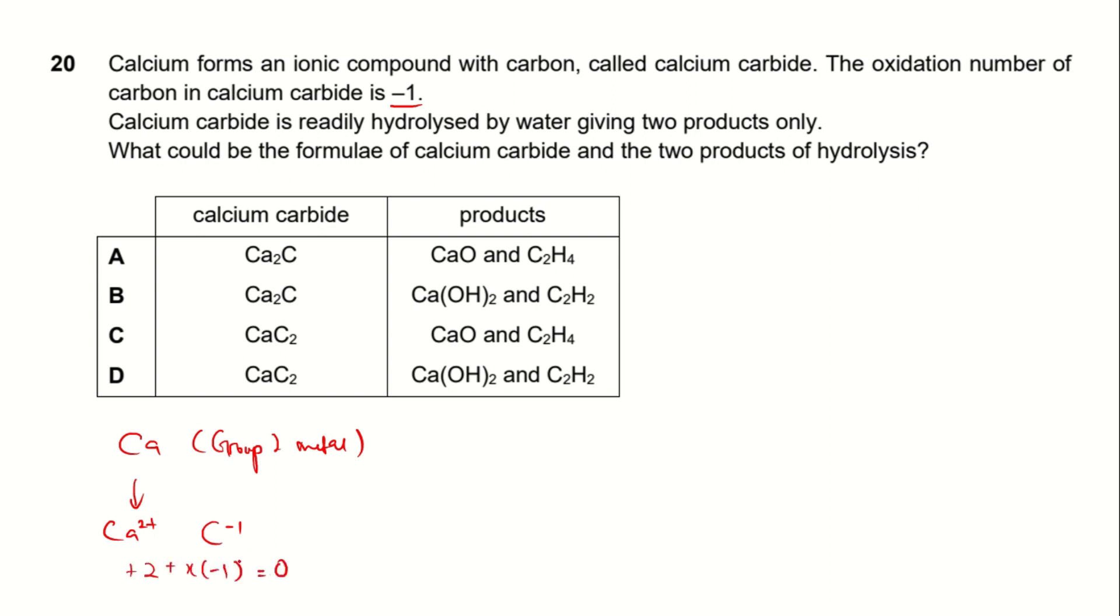I can use the oxidation numbers to find number of carbide in the compound. So this would give me x is 2. So I know the formula of the calcium carbide is CaC2.